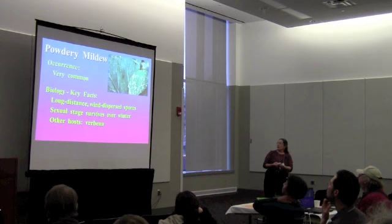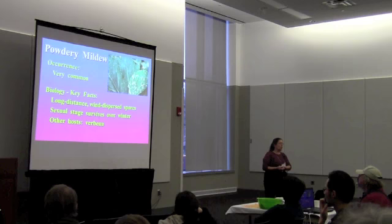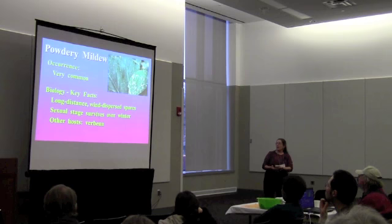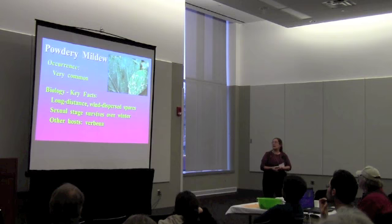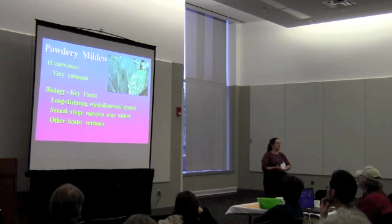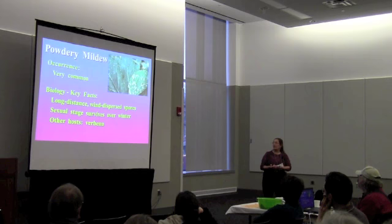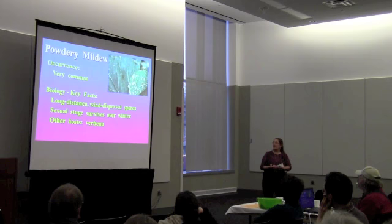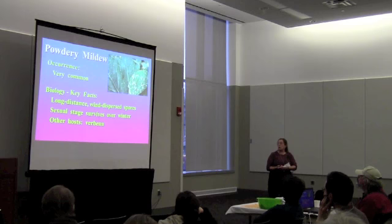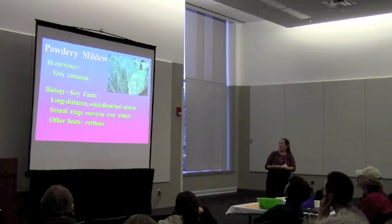Powdery mildew is a very common disease — if you grow cucurbits, you will see it every year. It hits the leaves, not the fruit, so the thought is often that you can tolerate it. But plants will die prematurely. Summer squash and zucchini will see a reduction in production. Melons won't have the sugars they normally would, and winter squashes won't have the flavor and won't store as well if they came from a plant severely affected by powdery mildew.